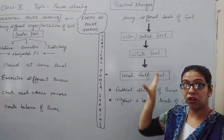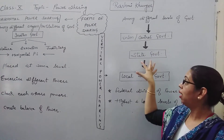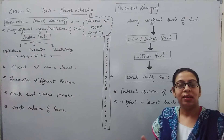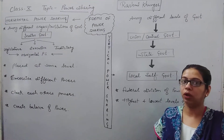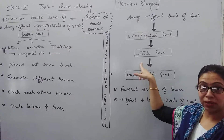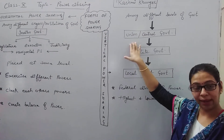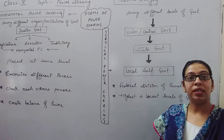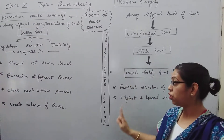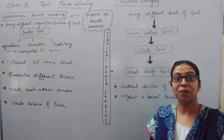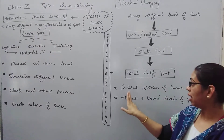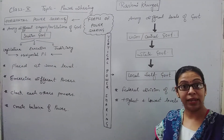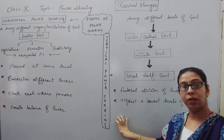The Union and Central Government's importance is obviously more than the State Government. If the Central Government is giving any order, the states listen and obey. Local Self-Government — municipalities, local panchayats — comes at the local level, under the State Government, and State Governments work as per the guidelines of the Union and Central Government. Your next chapter is Federalism — vertical power sharing is federal, meaning federalism stands for vertical power sharing. That's why it is called federal division of power.